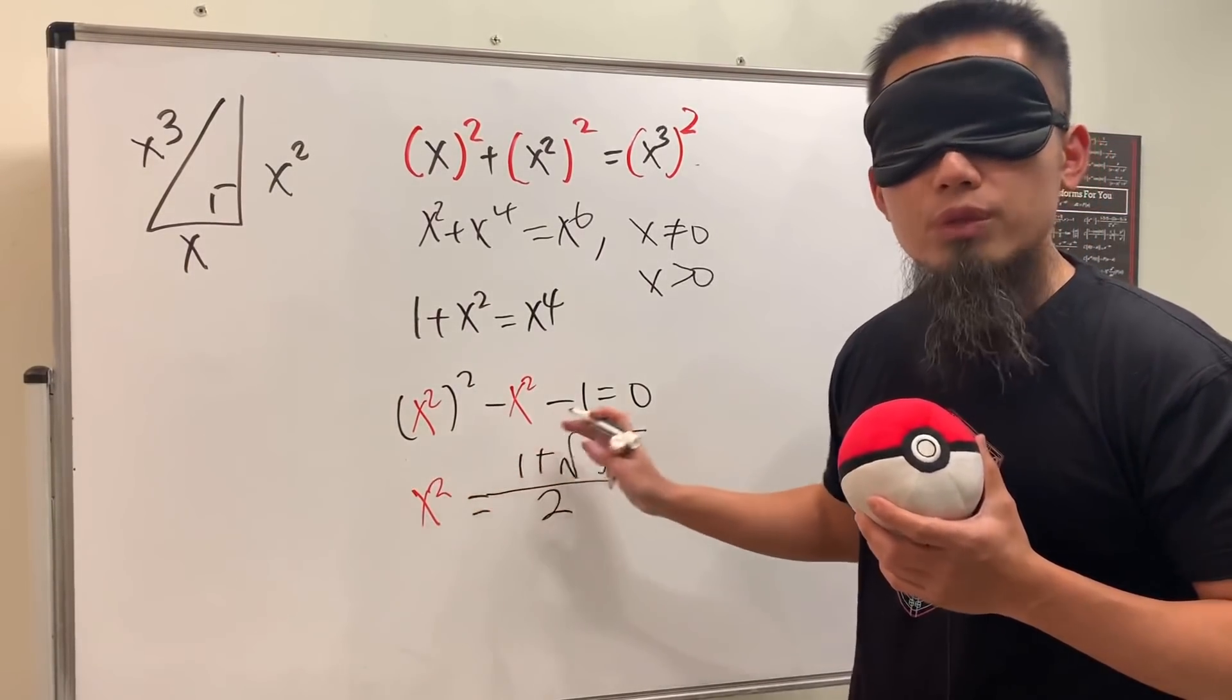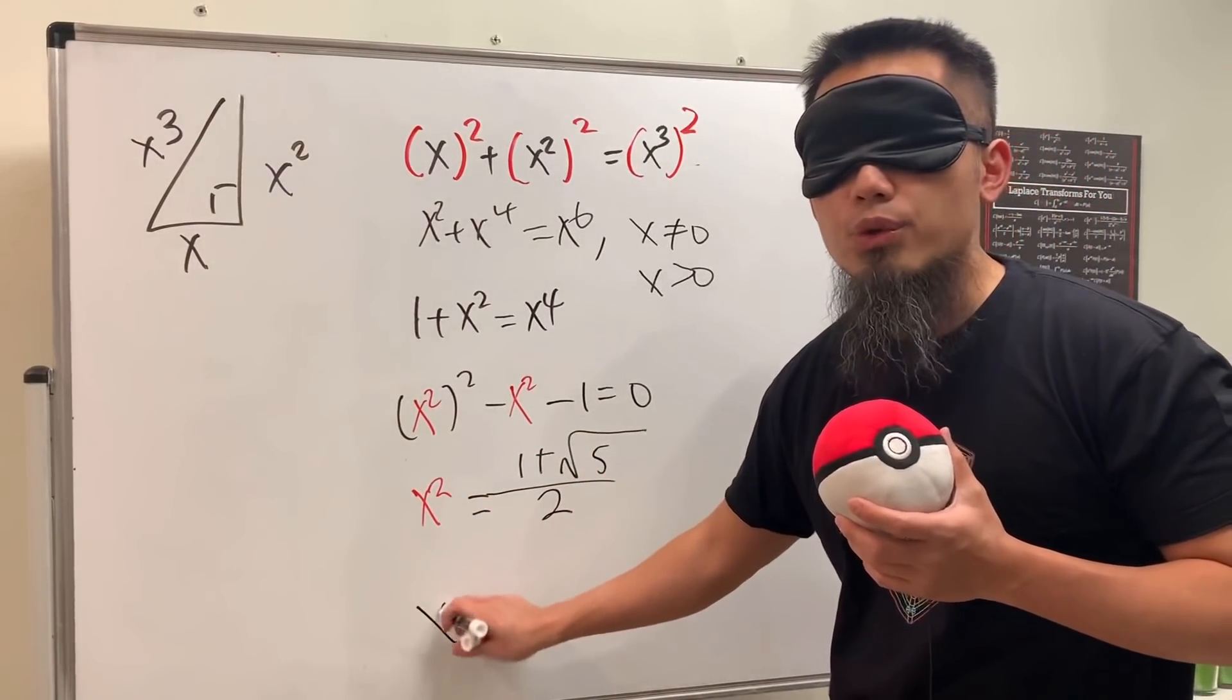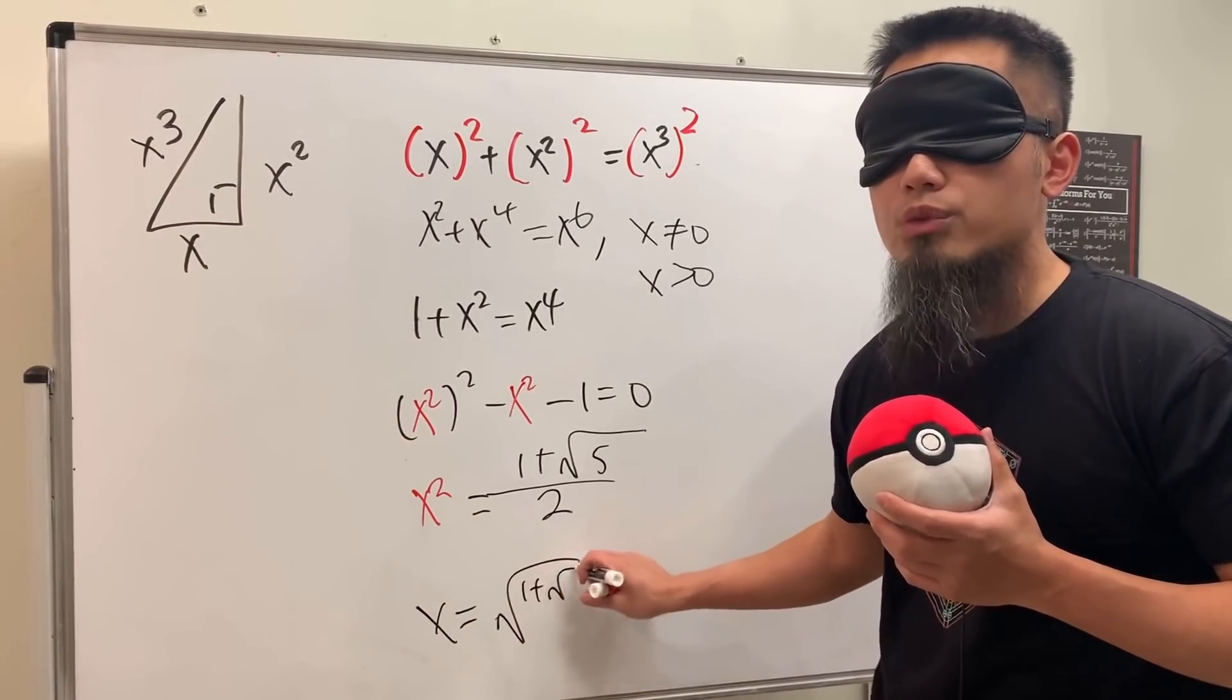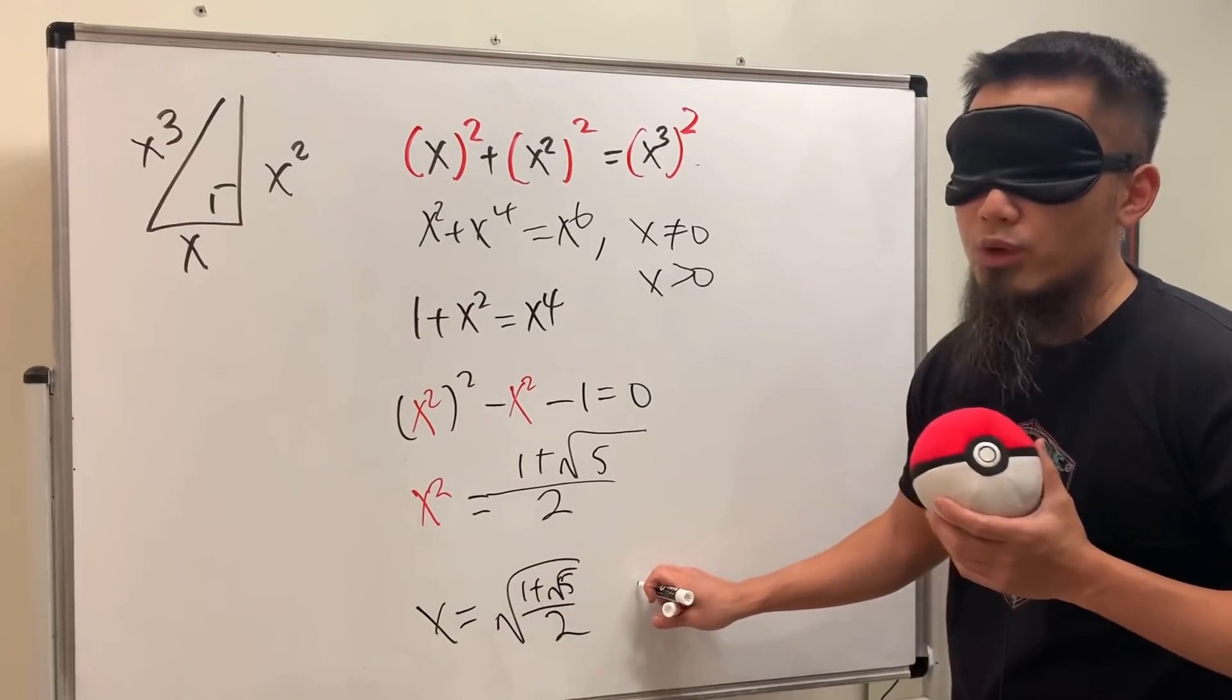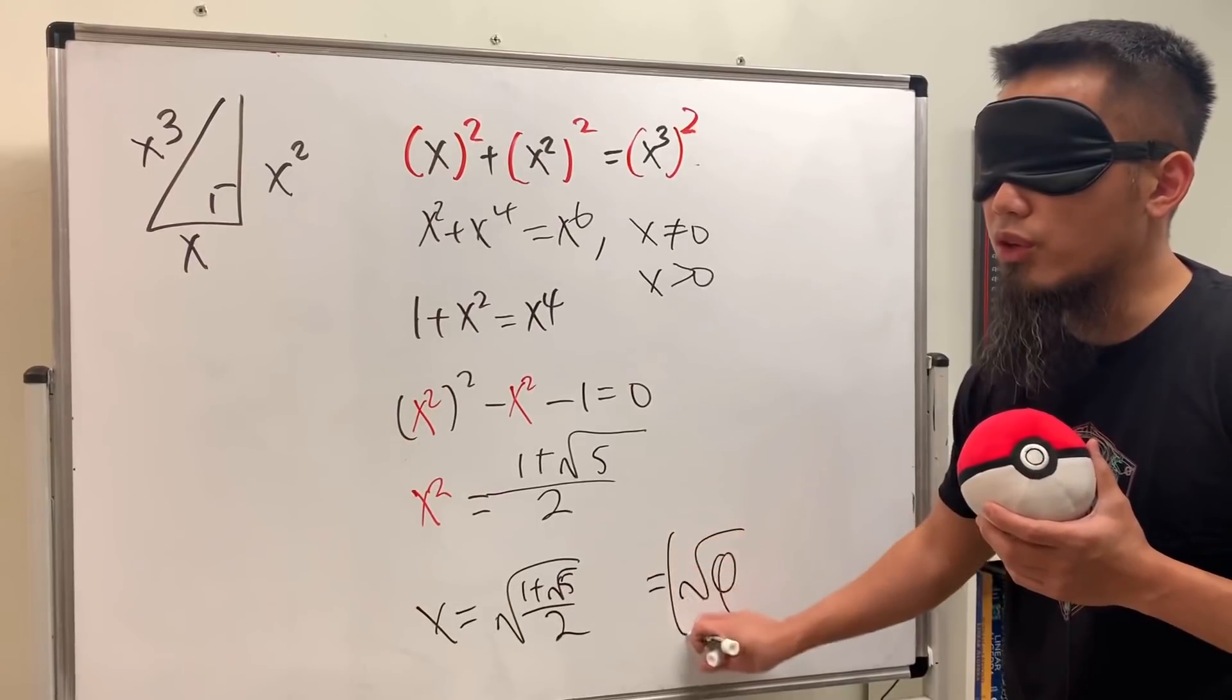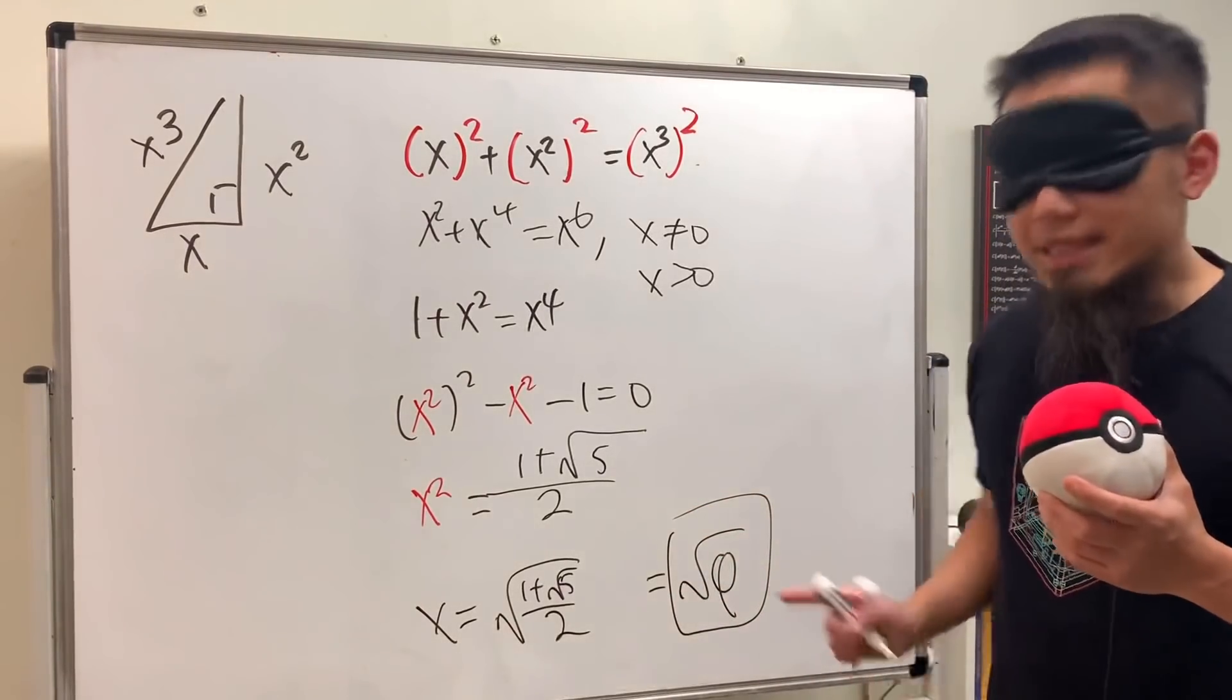X squared is equal to the golden ratio, so x is equal to the square root of 1 plus square root of 5 over 2. But of course, that's writing it more legitimately, which is the square root of the golden ratio. And that's it.